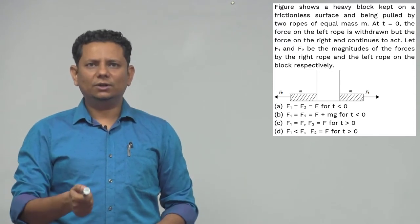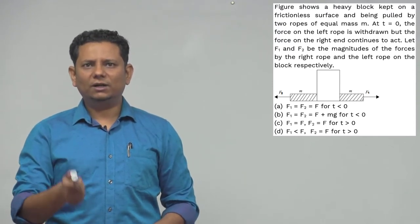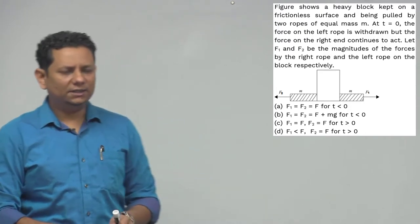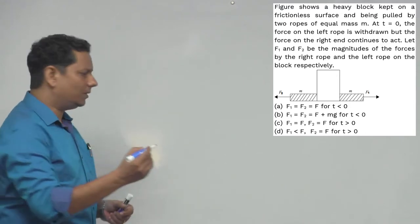Option (c) F1 is equal to F, F2 is equal to F for t greater than 0. Option (d) F1 less than F, F2 less than F for t equal to 0 and t greater than 0. All right.